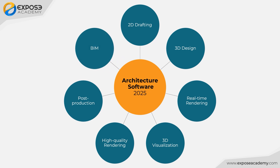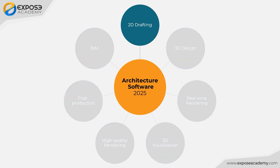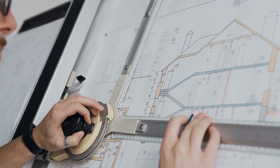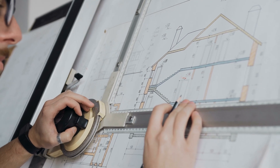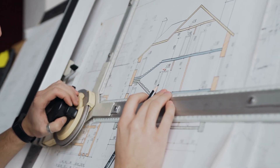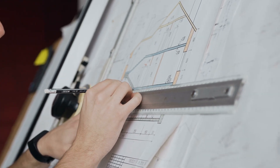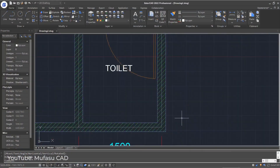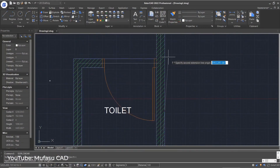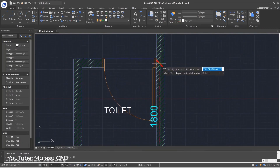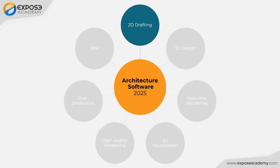The first is the 2D drafting category, or commonly known as CAD. We use software in this category to replace drawing by hand or with a drafting table. There are many software that we can use, but the most popular is AutoCAD.